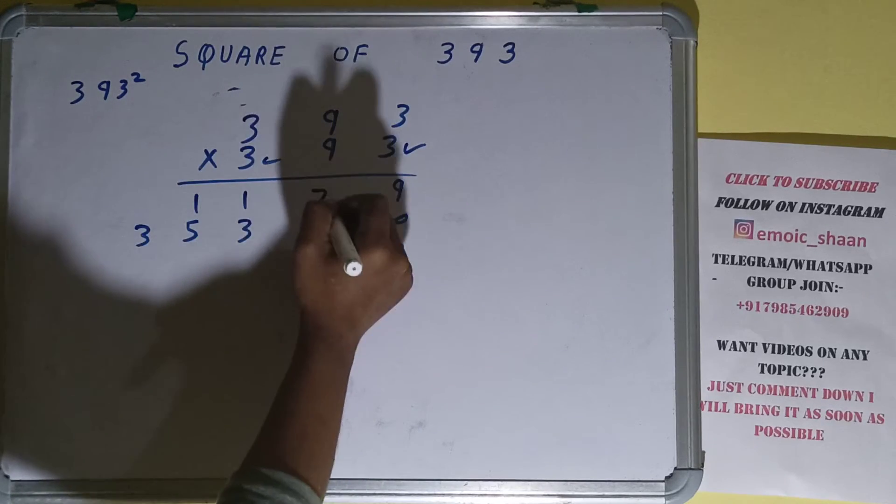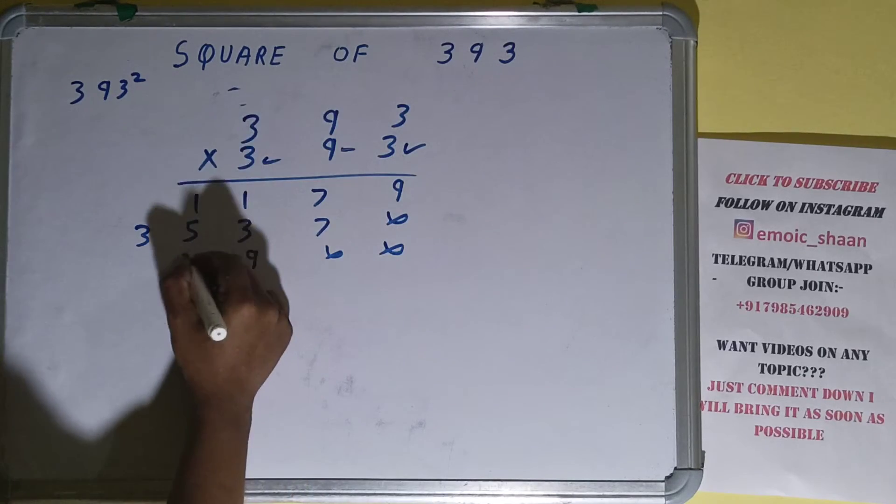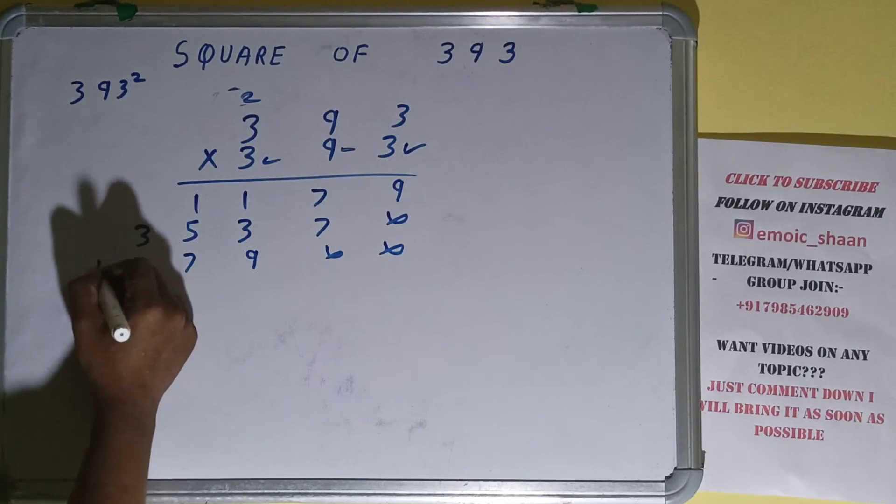Now this 3. 3 times 3 is 9. 3 times 9 is 27, 2 carry. 3 times 9 is 27 plus 2 is 29, so we get 11.